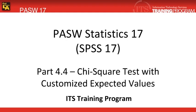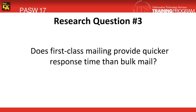Hypothetically, there's a manufacturing company that wants to try first-class postage for direct mailing. They're doing this to see if they can get faster response times than they have been receiving using bulk mail. The order takers are going to record how many weeks each order takes after mailing. Our research question is: does first-class mailing provide quicker response times than bulk mail?